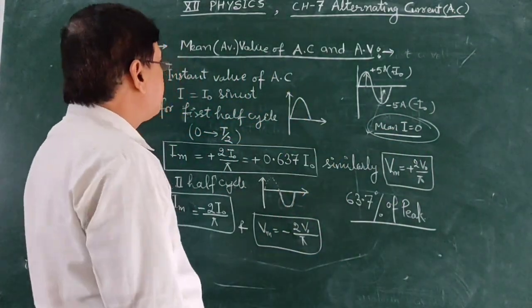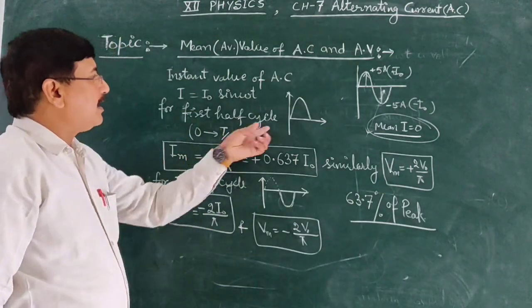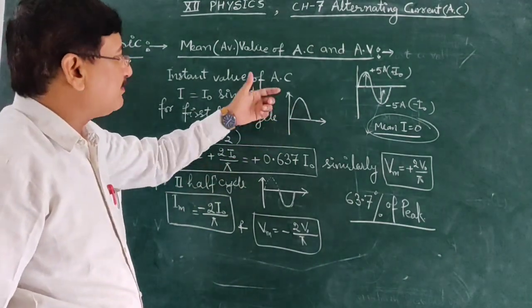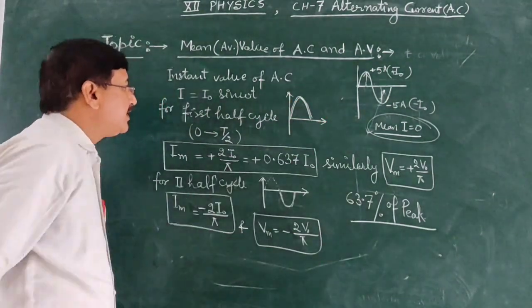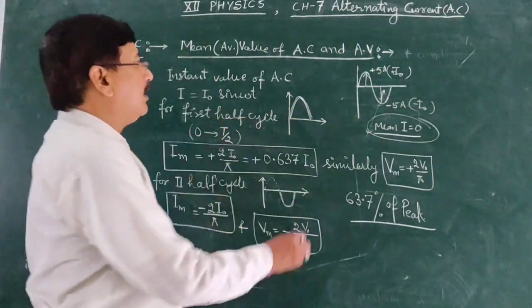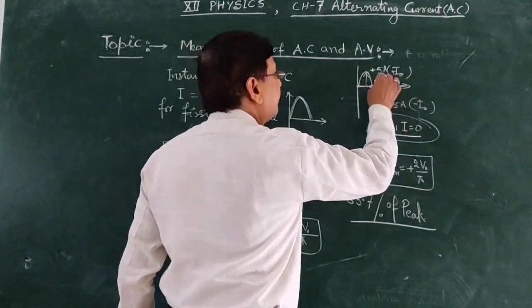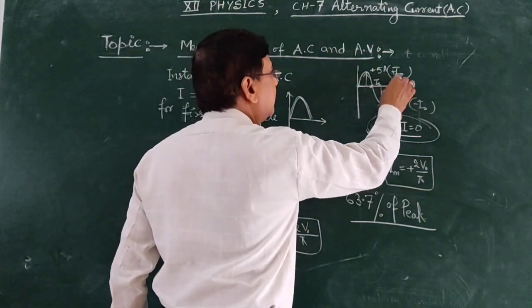Then we will take a half cycle, which means the first cycle, from 0 to π, which is the peak value, the maximum value.